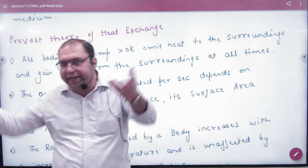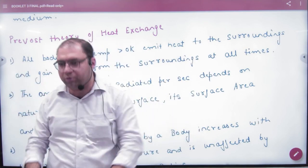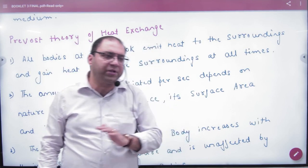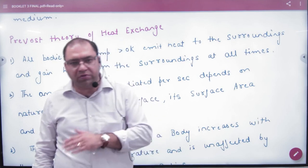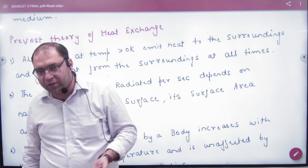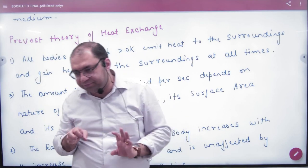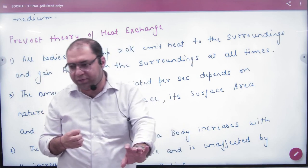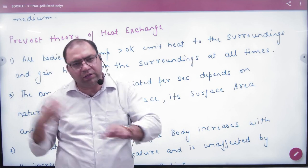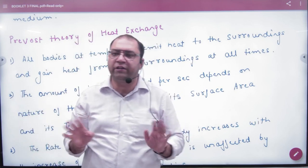My body is taking heat from the environment and releasing it — I am doing this continuously, taking and releasing. So my body temperature can increase, decrease, or remain constant, depending on how much heat I take in and how much I release. If I take in 10 calories and release 10 calories at the same time, my body temperature will remain constant.